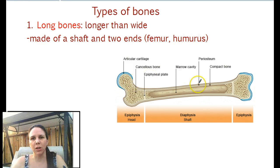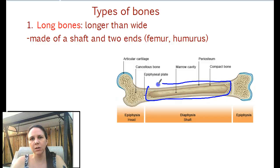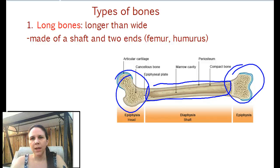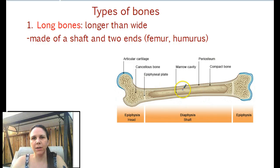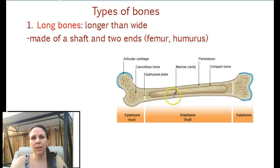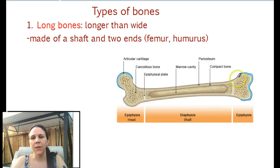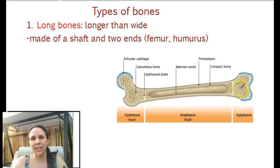We have long bones, which are long and skinny usually. They're made of a shaft — this long portion right here — and two ends. In long bones we typically see a hollow cavity inside, called the marrow cavity, which is this space inside. The ends usually have thicker bone inside because it's hollow in here. We've got the cavity and then the spongy bone in the ends.